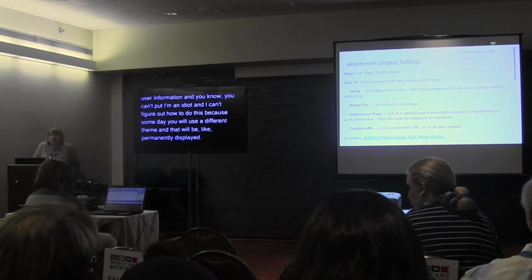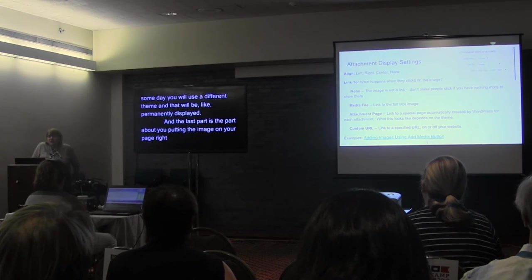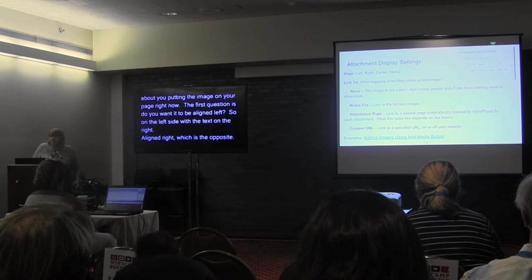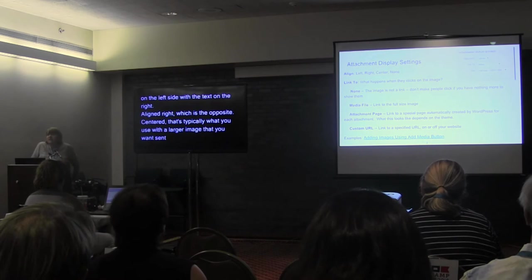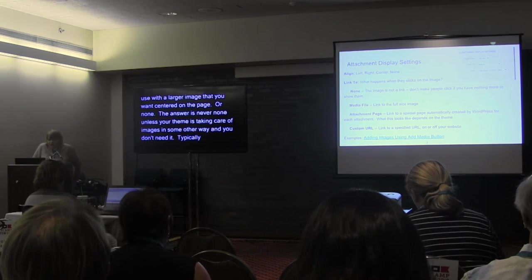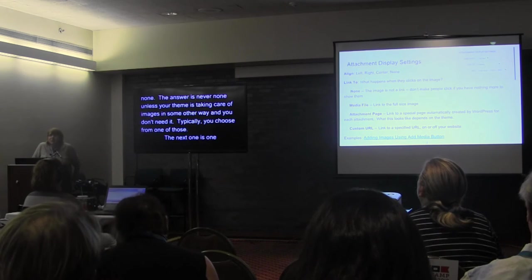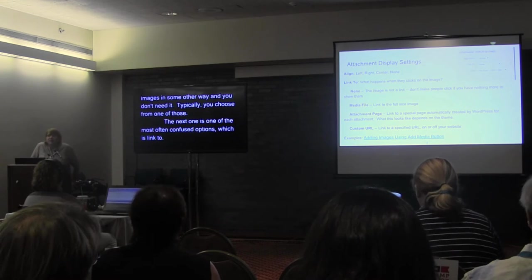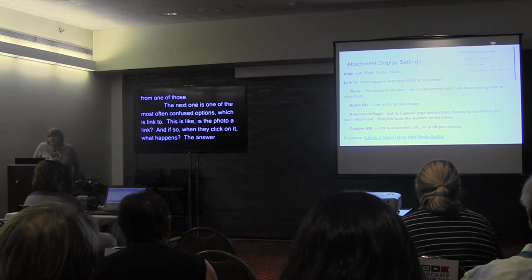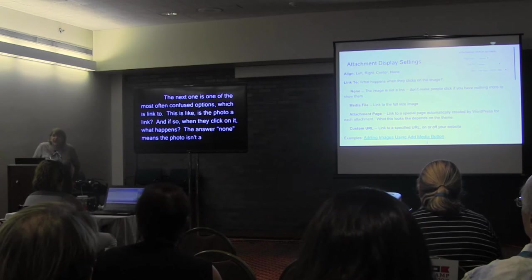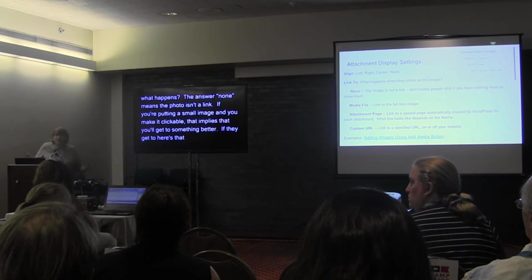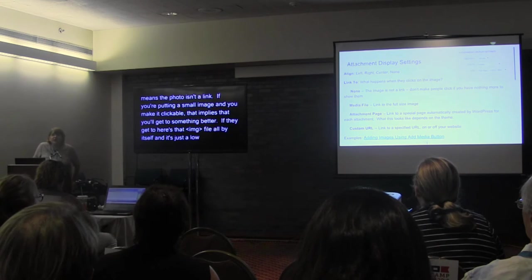The last part of the sidebar is about inserting the image right now. First question: alignment — left, with text on the right; right, which is the opposite; centered, typically used with larger images; or none. The answer is never 'none' unless your theme is handling images some other way. Second option is one of the most often confused: is the photo a link, and if so, what happens when they click it? 'None' means the photo isn't a link — I think people should use this more. If you put a small image and make it clickable, that implies there's something better to get to, so use 'none' if you don't have anything better to offer.